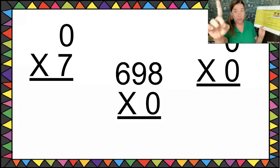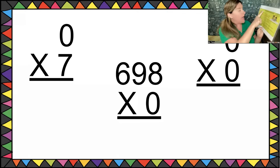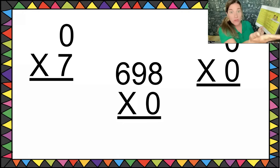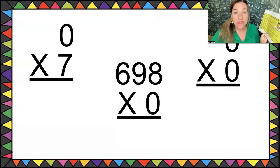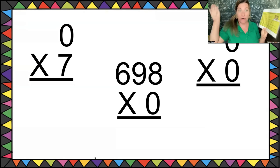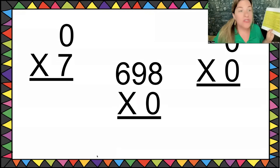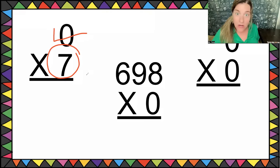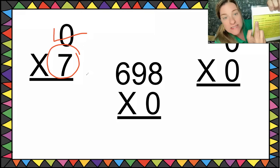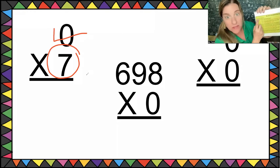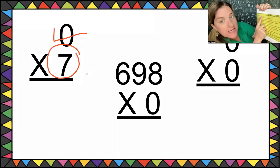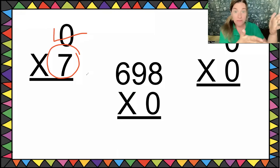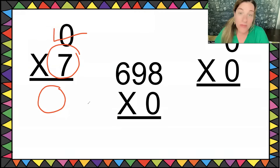I haven't learned my sevens rule yet — that comes in a later lesson. So I pick the easiest rule: the zeros rule. That makes seven my base number. My magical list tells me zero times any base number equals zero, including seven. So the answer is zero.